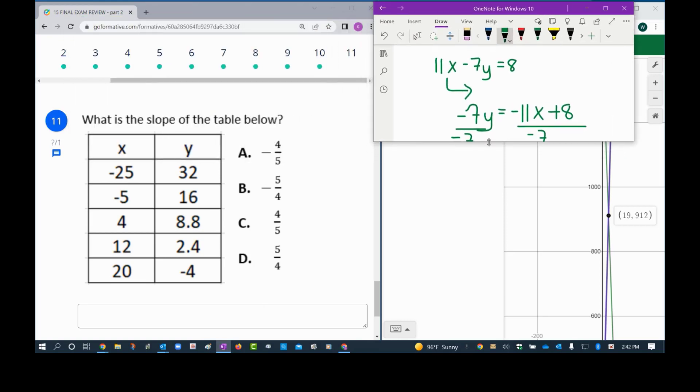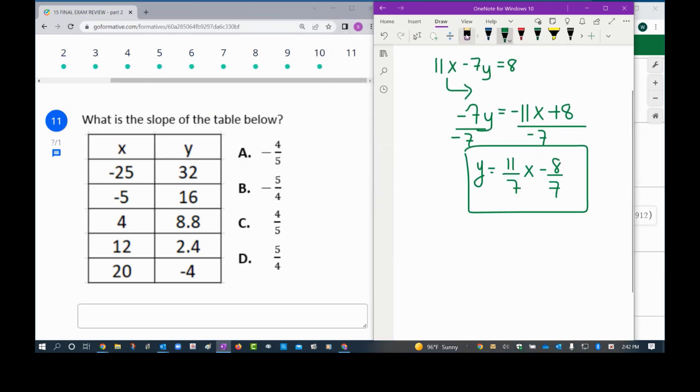And let me clear some space here, so let me dismiss this problem that we solved. And in order to find slope you need to have two very good points, and I'm going to choose the first two. It doesn't matter what points you choose. I don't like to work with decimals, so let's work with these.